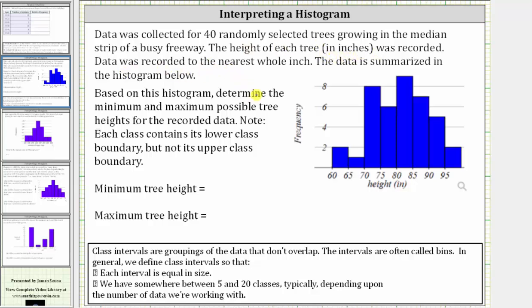Based upon this histogram, determine the minimum and maximum possible tree heights for the recorded data. Note each class contains its lower class boundary, but not its upper class boundary. So because the data is recorded to the nearest whole inch,